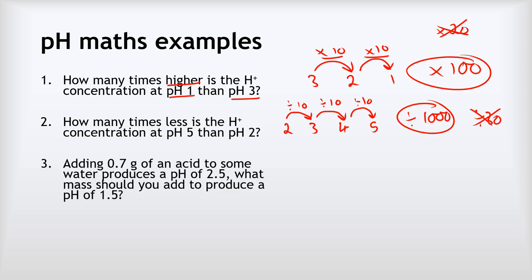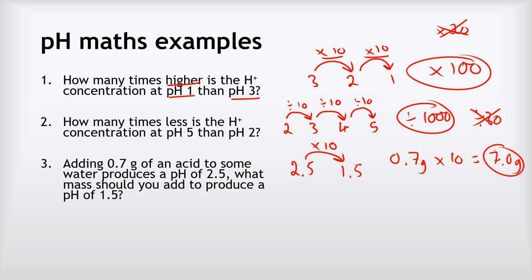Worked example three: adding 0.7 g of an acid to water produces a pH of 2.5. What mass should you add to produce a pH of 1.5? We want to go from pH 2.5 to pH 1.5 — a decrease of one pH unit — so we need to increase the H⁺ concentration by a factor of 10. Therefore, instead of 0.7 g, we multiply by 10 to give 7 g.